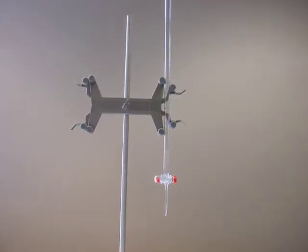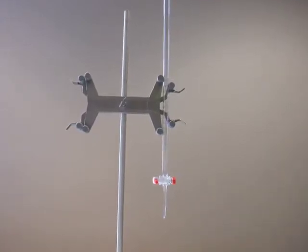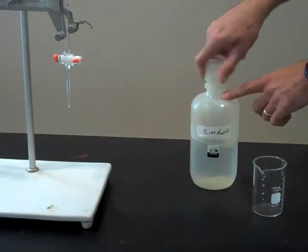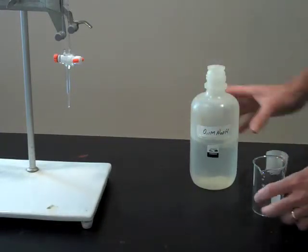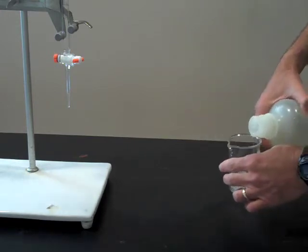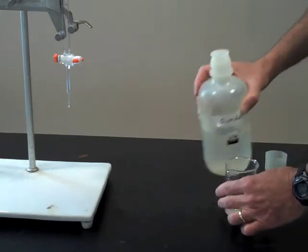Attach a burette clamp firmly to the stand and lock the burette into place. In this demonstration, we will be using sodium hydroxide to titrate a solution of acetic acid using phenolphthalein as a color indicator of the endpoint of the titration.